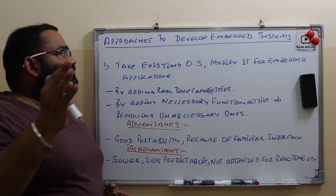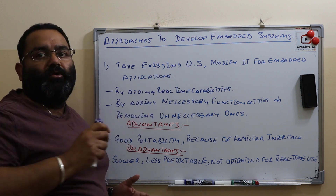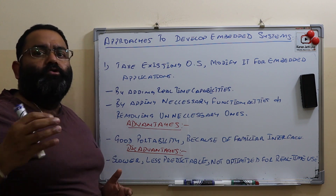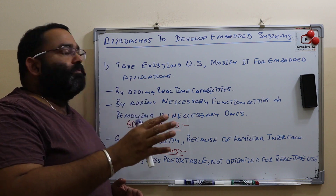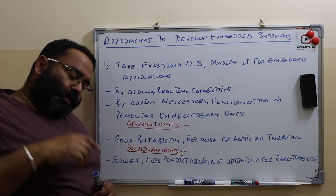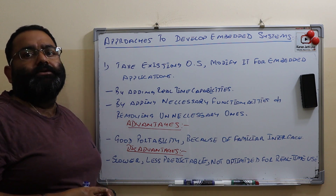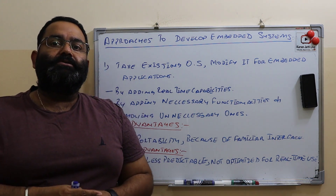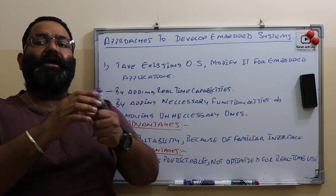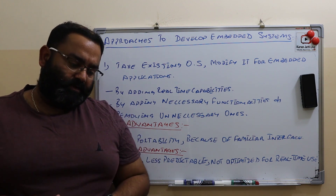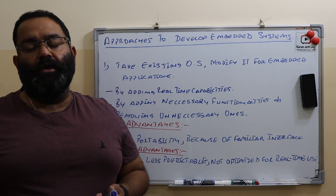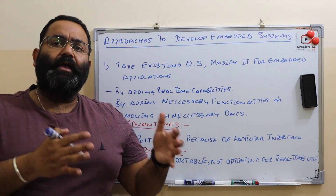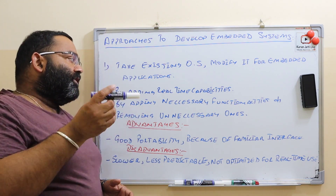Coming to our first approach - taking an existing operating system and modifying it for embedded applications. How do we do that? By adding real-time capabilities. We take a normal operating system and add real-time capabilities to it. Real-time capability is the capability in which the operating system must respond within some fixed time frame. When we add real-time scheduling or real-time capability to our normal operating system, then it can be used for embedded applications.